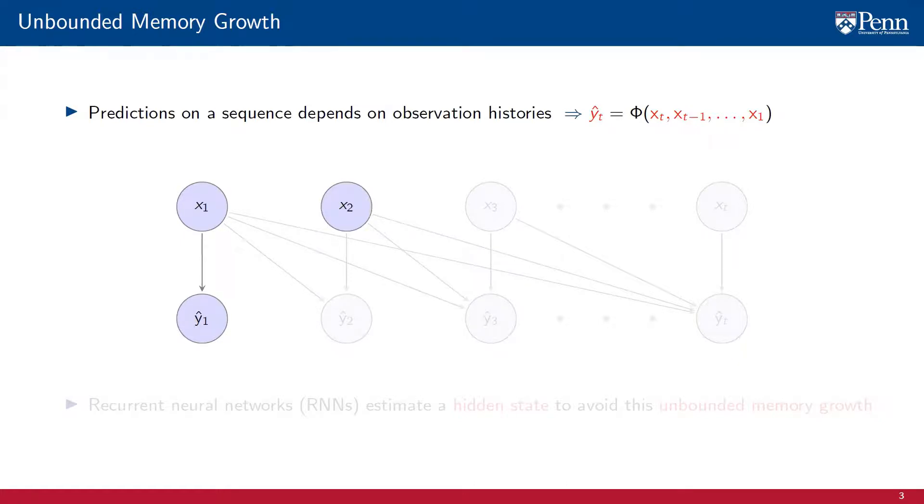At time 2, we observe input X2. We now have to make a prediction Y2 hat. But this prediction depends not only on the value we observe at time 2, it also depends on the observation at time 1. The amount of data we have to store doubles. More importantly, the complexity of the learning test squares. Remember that learning complexity grows exponentially with the number of input dimensions.